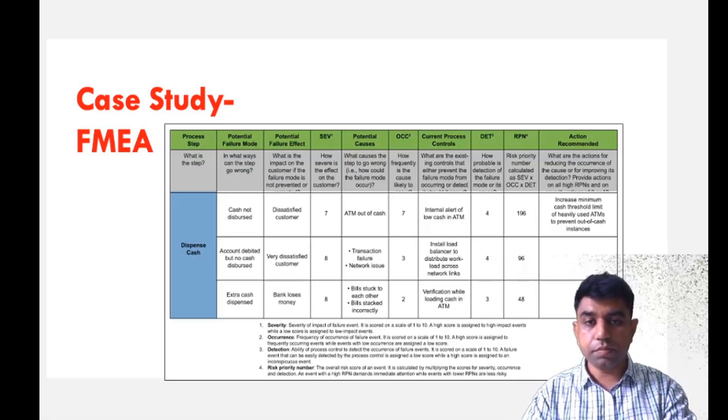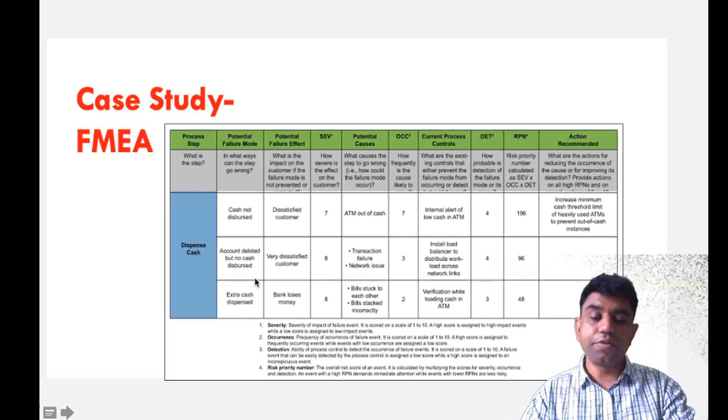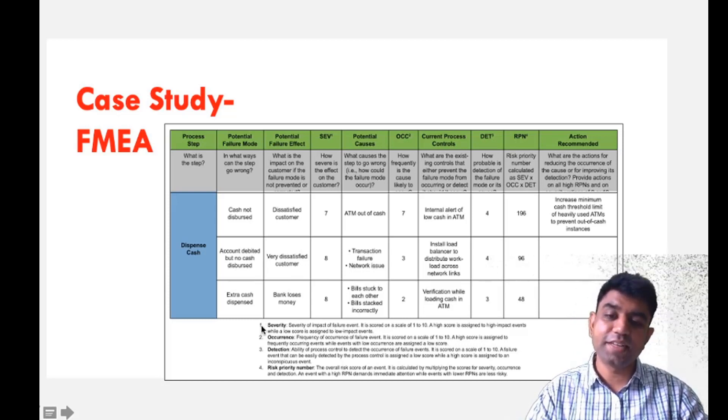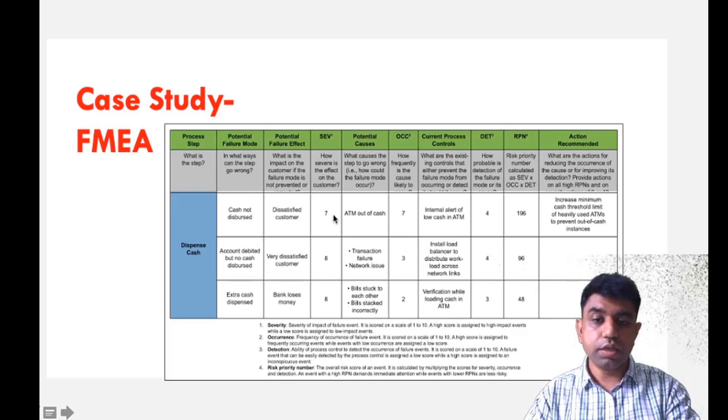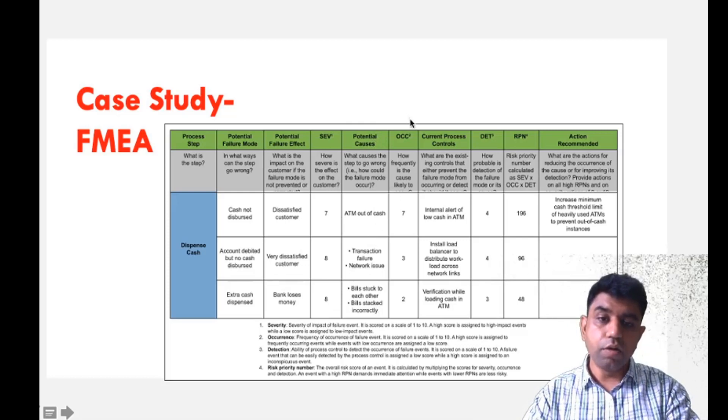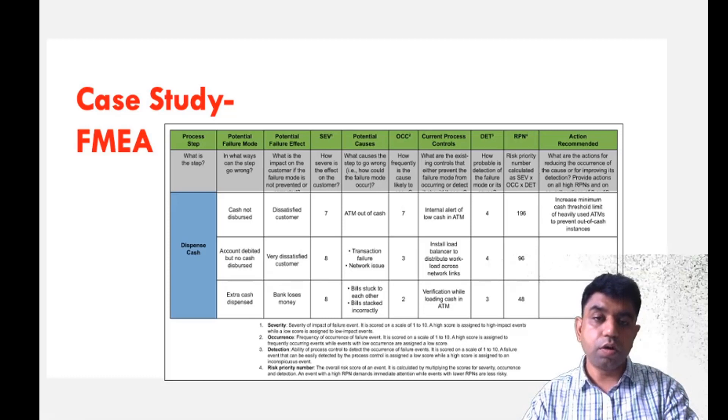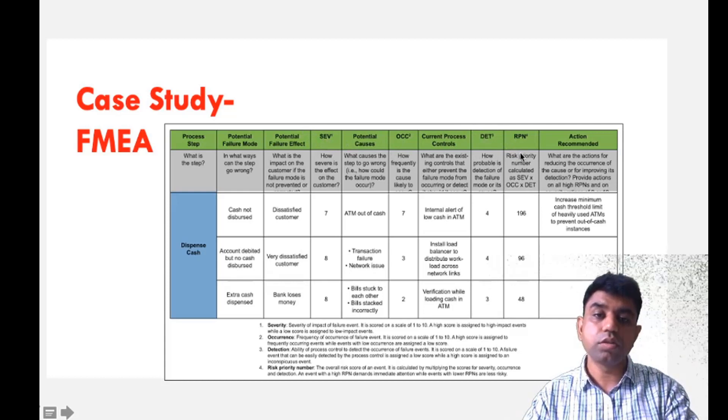Let me take another case study of cash dispensing. There are different scenarios. Cash may not disperse, account may be debited but cash may not come out. In the rare case, extra cash may be dispensed. For all these different modes, we write the potential effects. What will be the severity and how does it affect the customer? We rank that. The potential causes behind each failure are written. How frequently it occurs is noted. Current process controls are written to eliminate the issue.